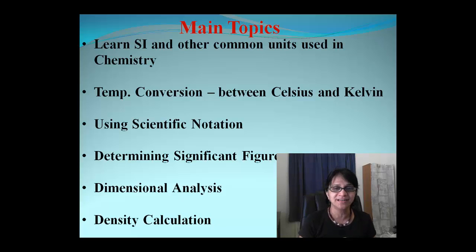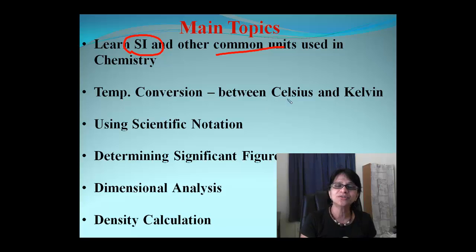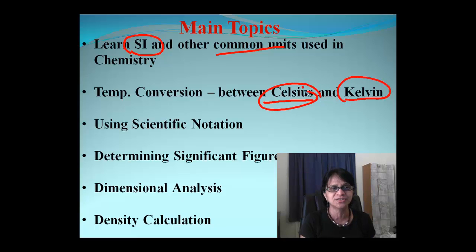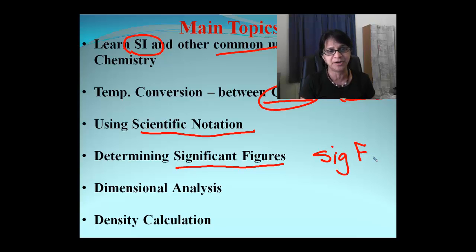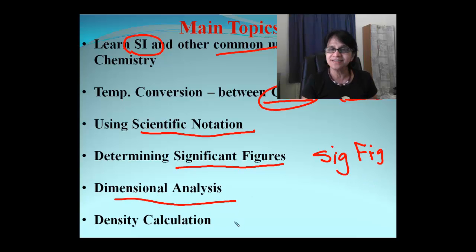The main thing we are going to learn is about the new units in chemistry. We are going to talk about SI units and some common units. Then we are going to talk about some conversion in temperature units — mainly Celsius and Kelvin. Then there is scientific notation, a very important part of chemistry calculations. Then we talk about significant figures, or SIGFIG — that's my pet word for significant figures. Then we talk about dimensional analysis and then a little bit of density calculations. So let's begin with our chemistry calculations.